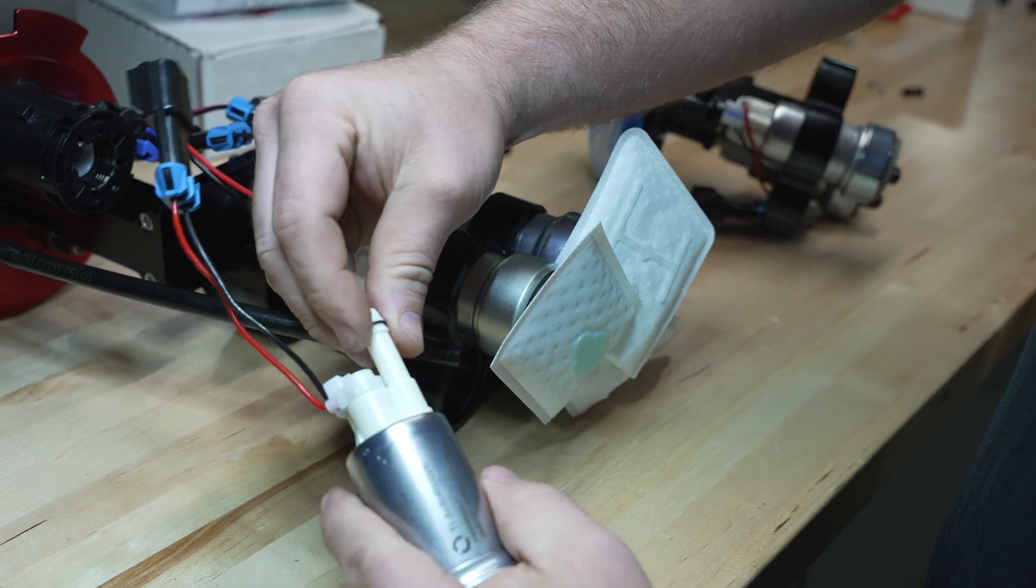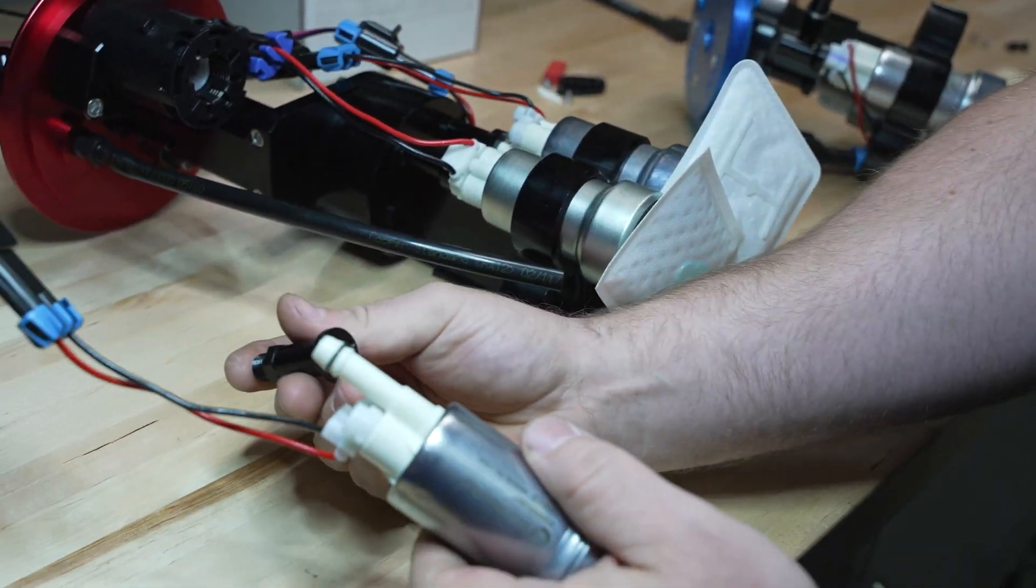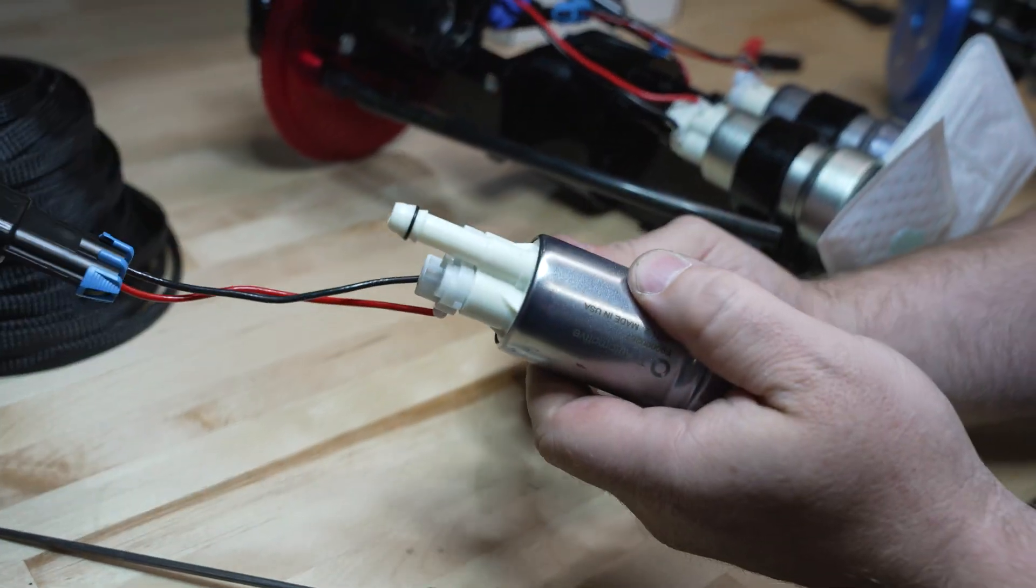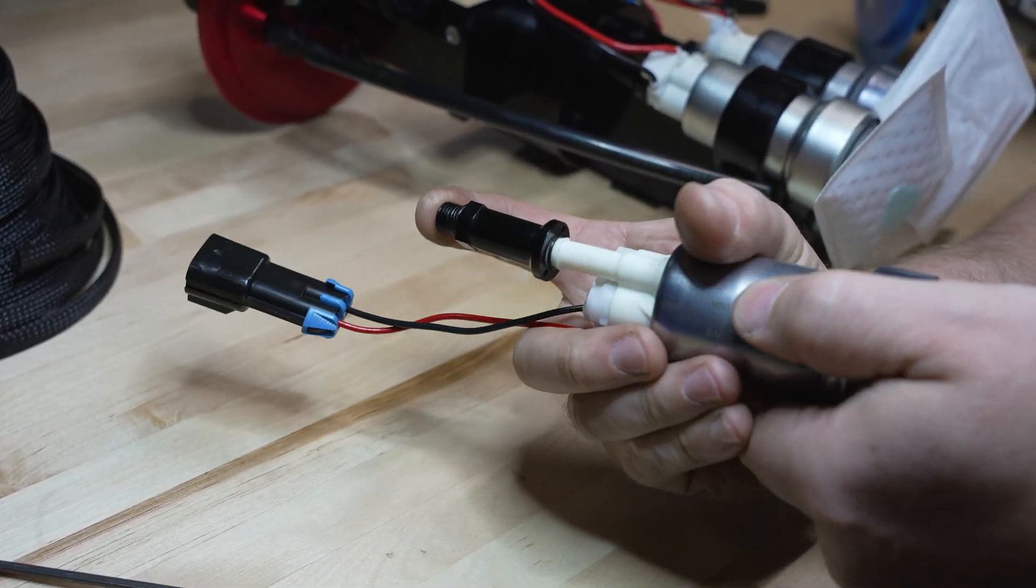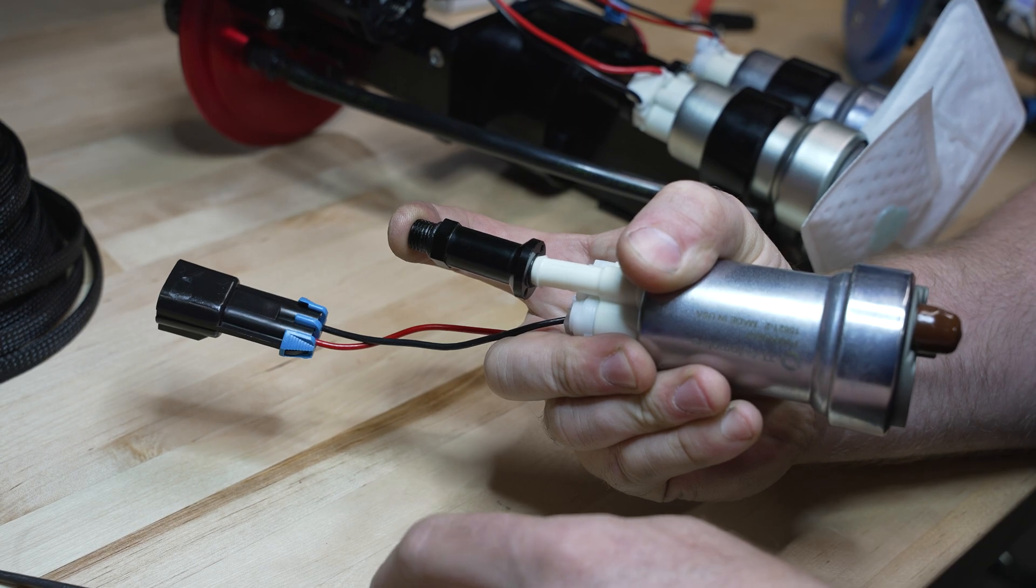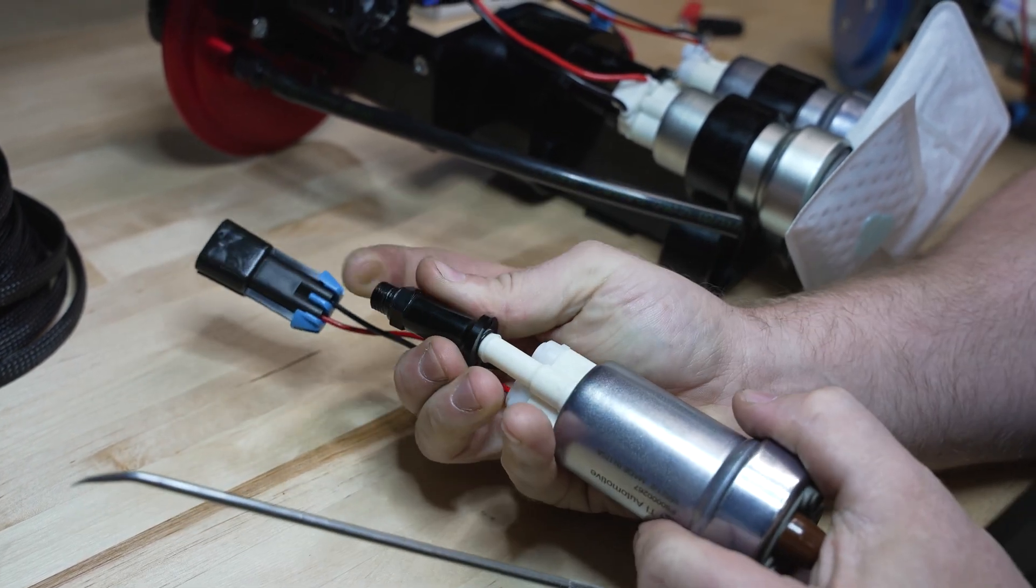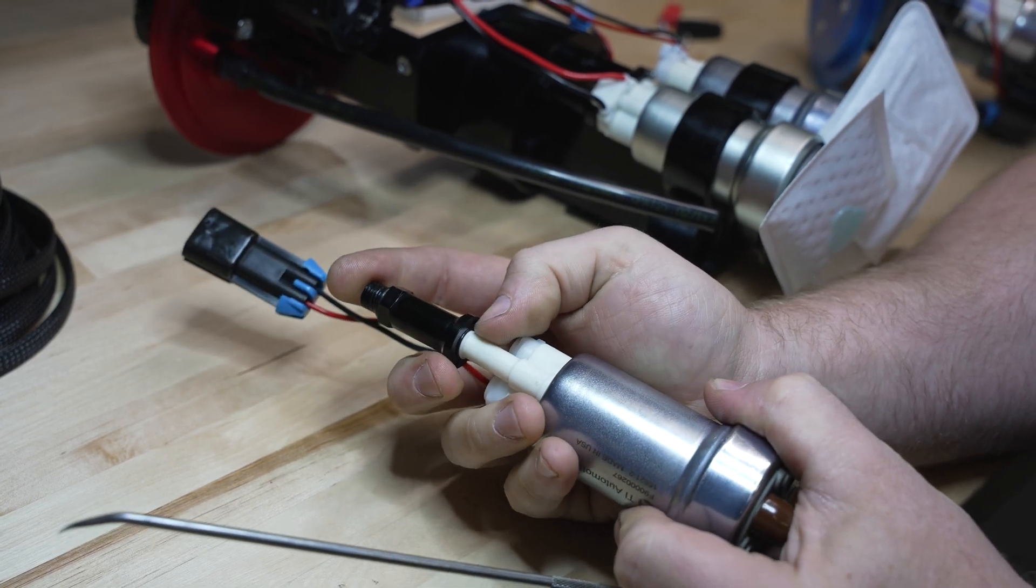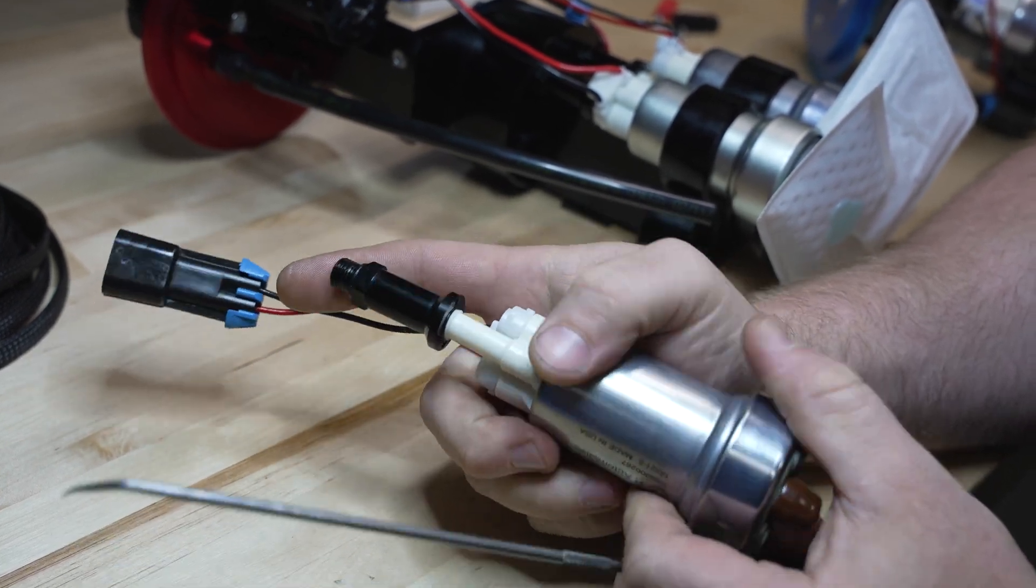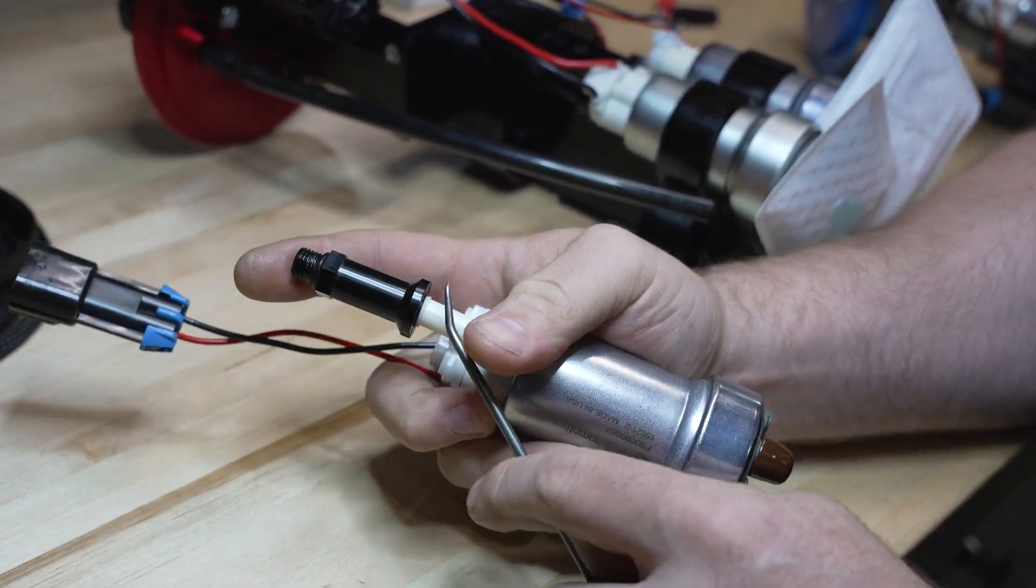When you go to put this on, it does have a chamfer in it. You'll want to just kind of sit it onto the o-ring, give it a slight bit of pressure. You don't want to give it too much pressure because what happens is it's just going to start riding the o-ring down off of this because it is a barb.